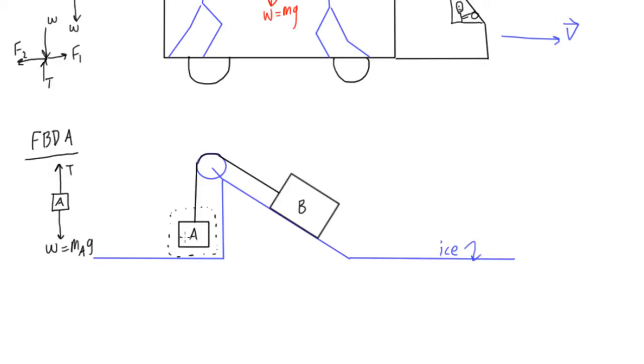That's all we need for a free body diagram of A. There's no forces in the x direction, as you can see. There's no one pushing on it, or there's no wind, or anything like that that we would have to account for. So now we want to do a free body diagram for B.